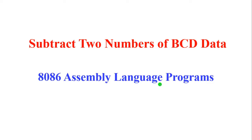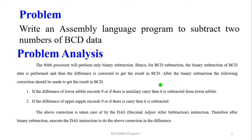Welcome to the microprocessor and microcontroller lecture series. Here we are going to write an assembly language program for subtraction of two BCD data. BCD stands for Binary Coded Decimal. The 8086 processor will perform only binary subtraction because every processor can only support binary numbers. Hence, binary subtraction of BCD data is performed and then the difference is corrected to get the result in BCD, because BCD numbers only range from 0 to 9.